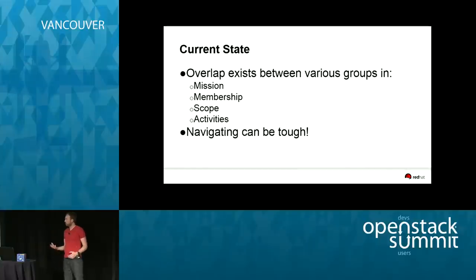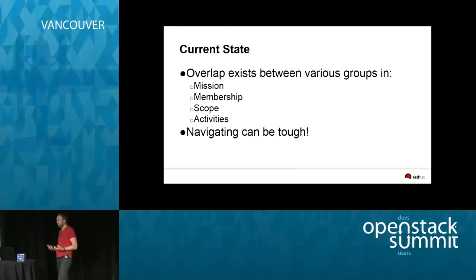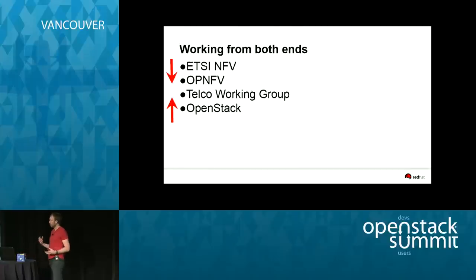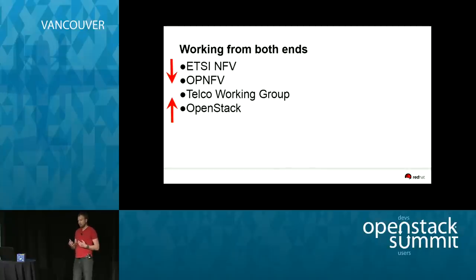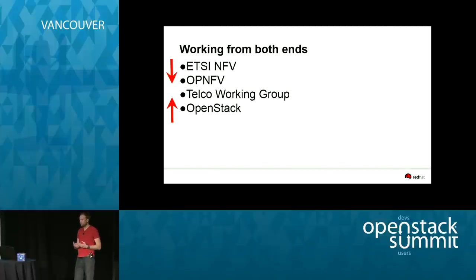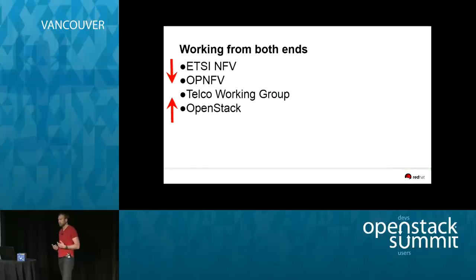What we're trying to do across these interrelated bodies — ETSI NFV, OPNFV, the OpenStack Telco Working Group, and OpenStack itself — is work together at the intersection point where we can achieve success. There is overlap in terms of mission, membership, scope, and activities, so navigating it can be tough. We try to help the telecoms and NFV community and the OpenStack community speak the same language.